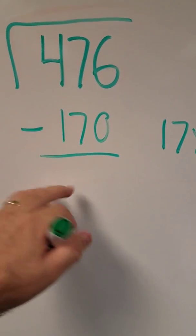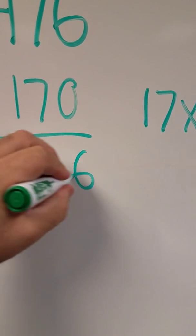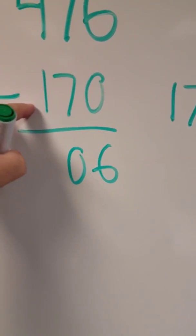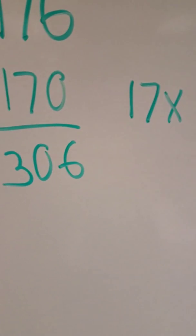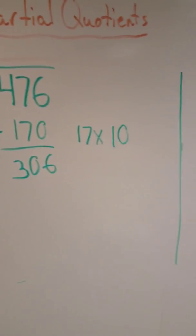So let's subtract this out. 6 minus 0 is 6. 7 minus 7 is 0. 4 minus 1 is 3. And I look at that and say, okay, I've done part of it.